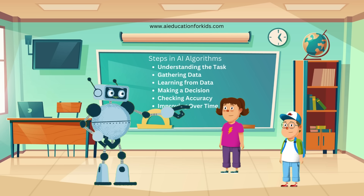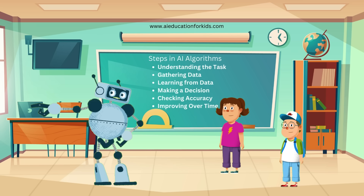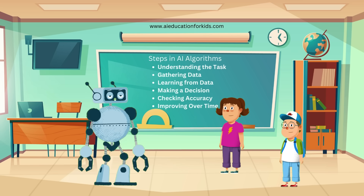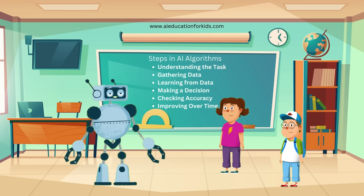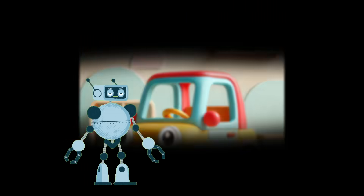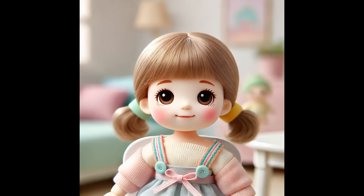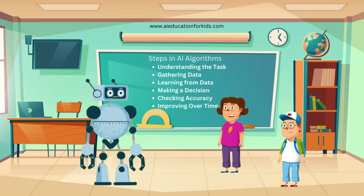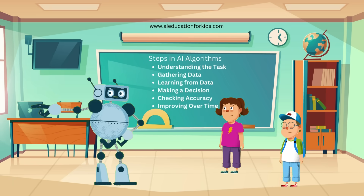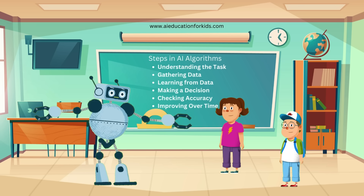To gain a deeper understanding of AI data, please check out our video by clicking the link in the video description below. The third step in an AI algorithm is learning from data. In this step, you observe that cars have wheels, dolls have dresses, and blocks are cube-shaped. So the AI learns what makes each toy different? Exactly, Jenny. This step is like teaching the AI how to recognize different things. The AI learns the features of different categories from the data it has collected.